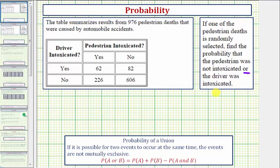In this case we're trying to determine the probability of a union of two events. Because these two events can occur at the same time, they are not mutually exclusive. Therefore we'll apply the probability formula: if it is possible for two events to occur at the same time, the probability of A or B equals the probability of A plus the probability of B minus the probability of A and B. We'll see in this problem why we have to subtract this probability.